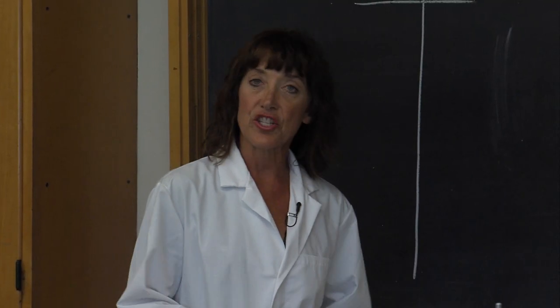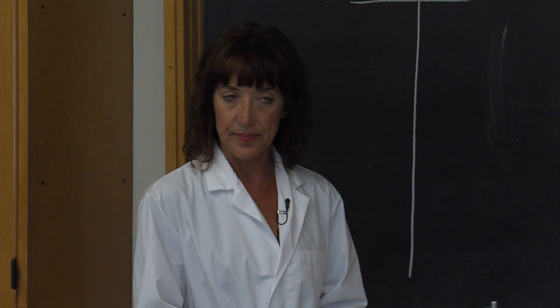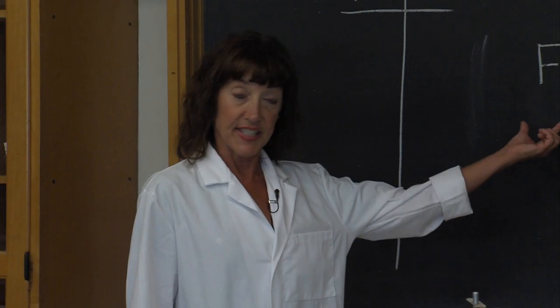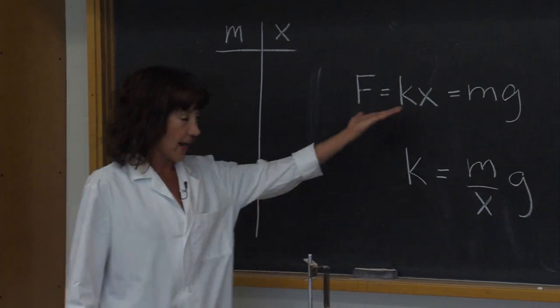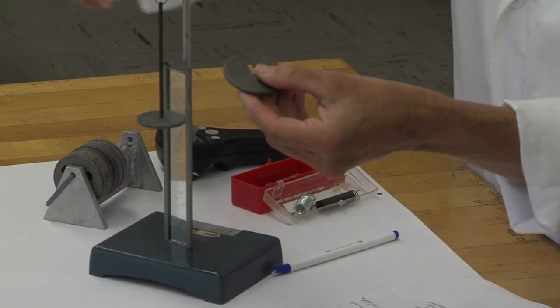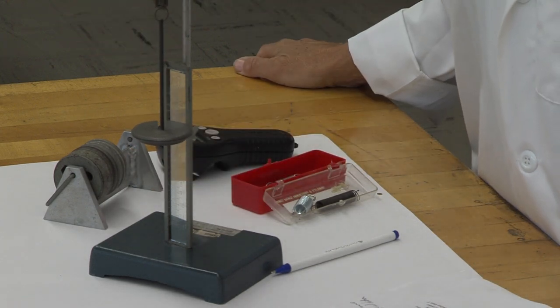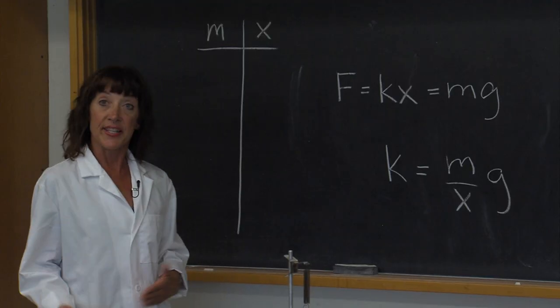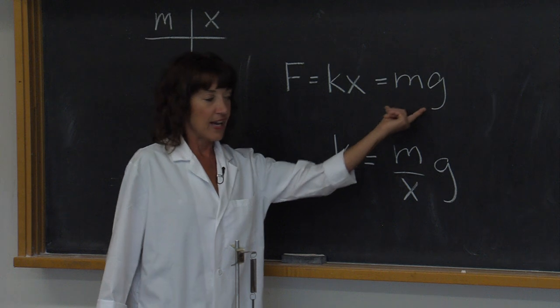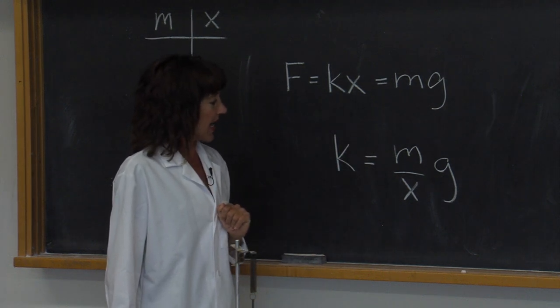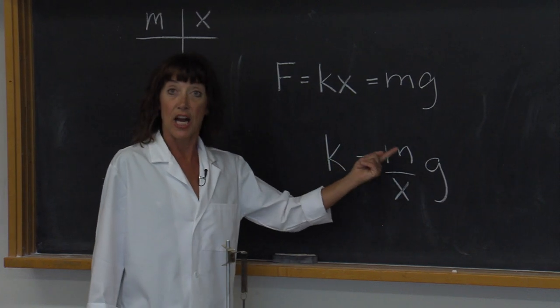Now let me show you how to solve for k. We've already established that the force required to displace a spring from its equilibrium position is equal to the stiffness of the spring, or k, times the amount of displacement, or x. The spring is also experiencing a force mg due to the applied masses. So in this case, kx is also equal to mg. I can solve for k by dividing both sides by x, and I will come up with the expression that k equals m over x times g.